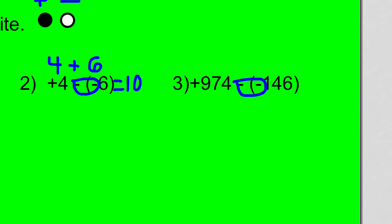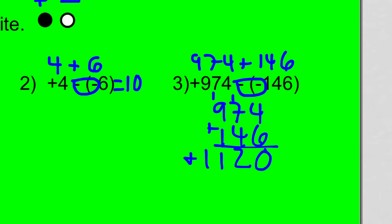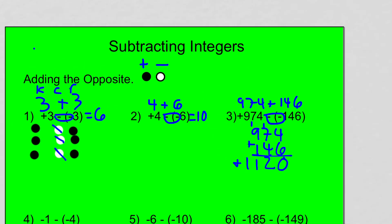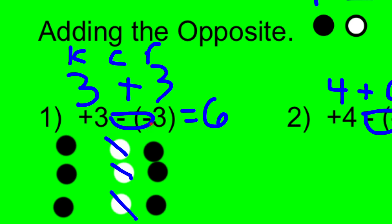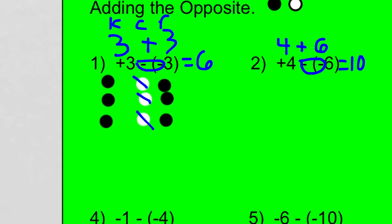Applying that same idea to larger numbers: whenever I have a minus-minus in the middle, think of it as 974, change minus to plus, flip negative 146 to positive 146. I'll add them in columns: 4 plus 6 is 10, carry the 1, that's 12, and that's 11 — positive 1120. So when you see this minus-minus situation, think add the opposite. Now let's look at more examples. Number 4: negative 1 take away negative 4.